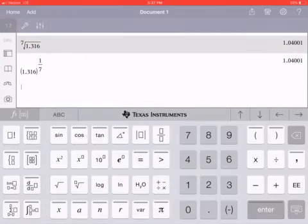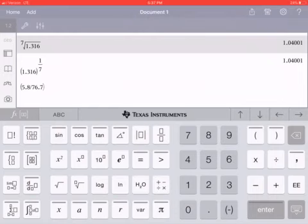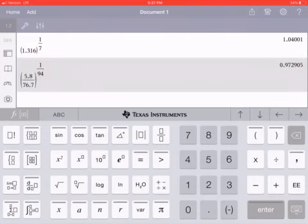So I'm going to actually enter it on the calculator so you guys can see. So we're going to have open parentheses, or I could use the fraction tool, but I know not all of you have it, so I'm going to use parentheses, and then I'm going to enter 5.8 divided by 76.7. And then we need to use the exponent symbol, and then we're going to put in there the fraction 1 divided by 94 as the exponent, and that's going to be taking the 94th root of that quantity. So we get an answer of 0.9729.